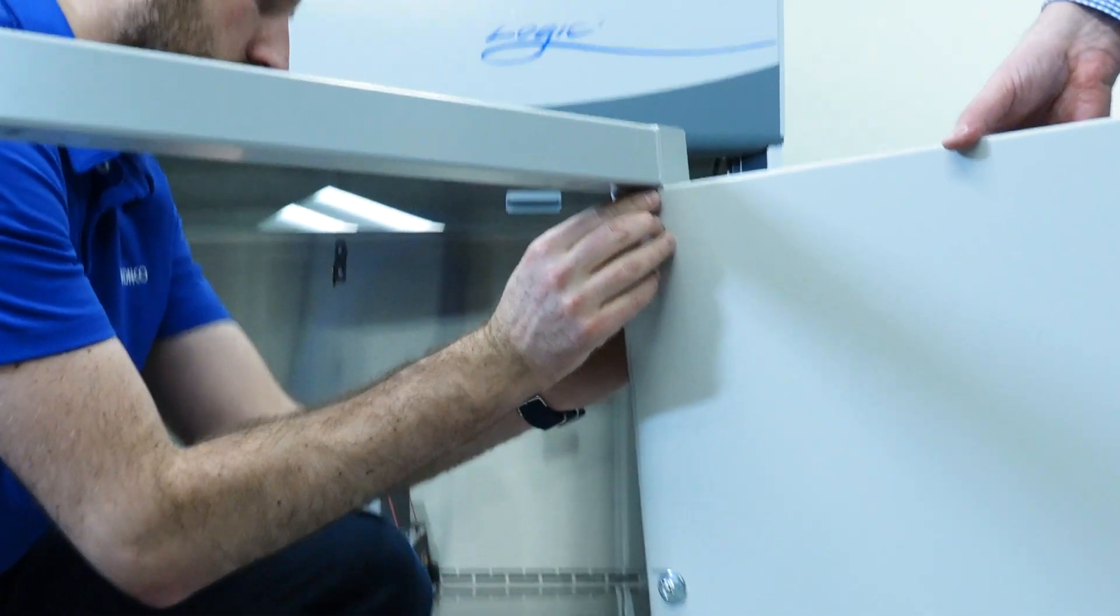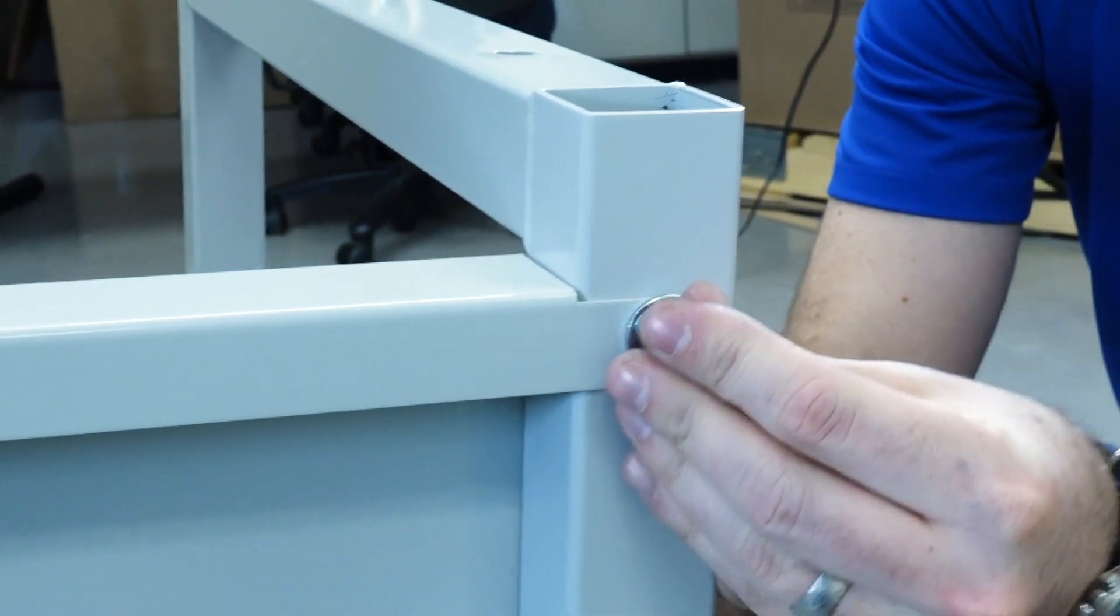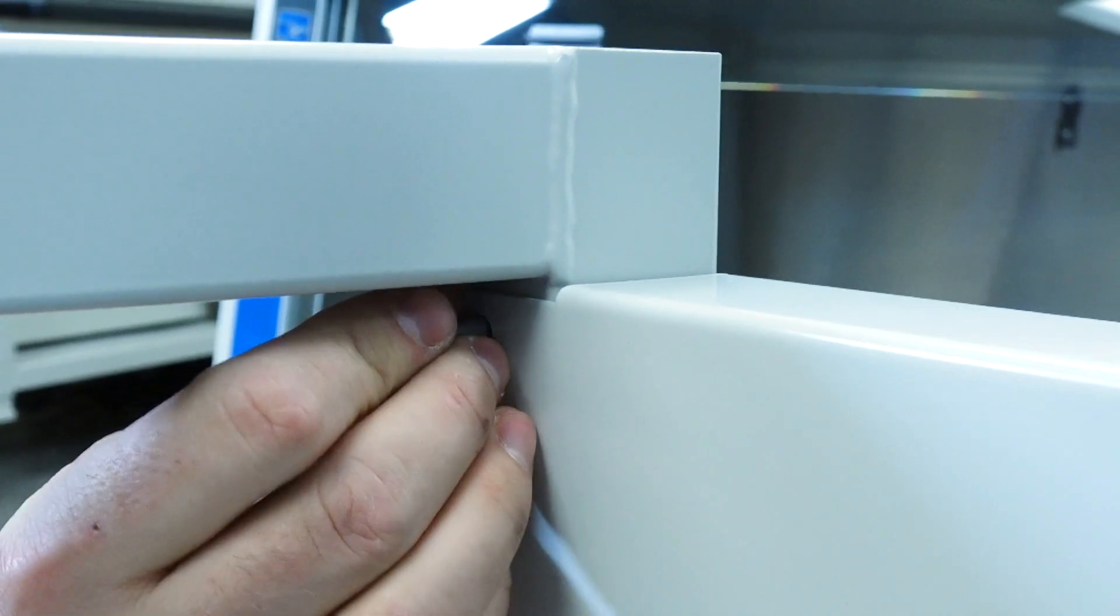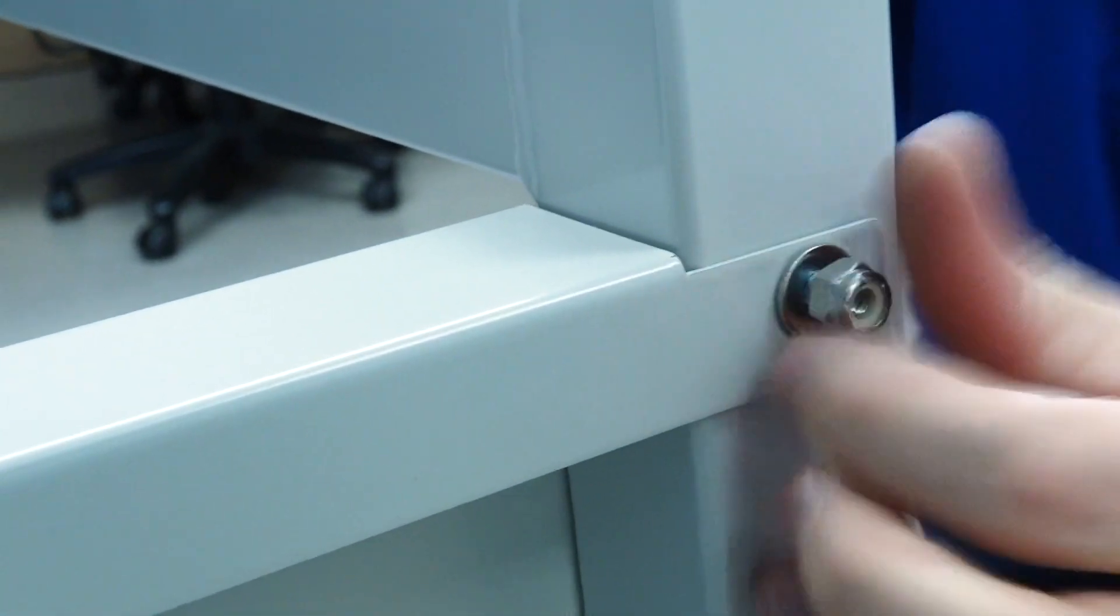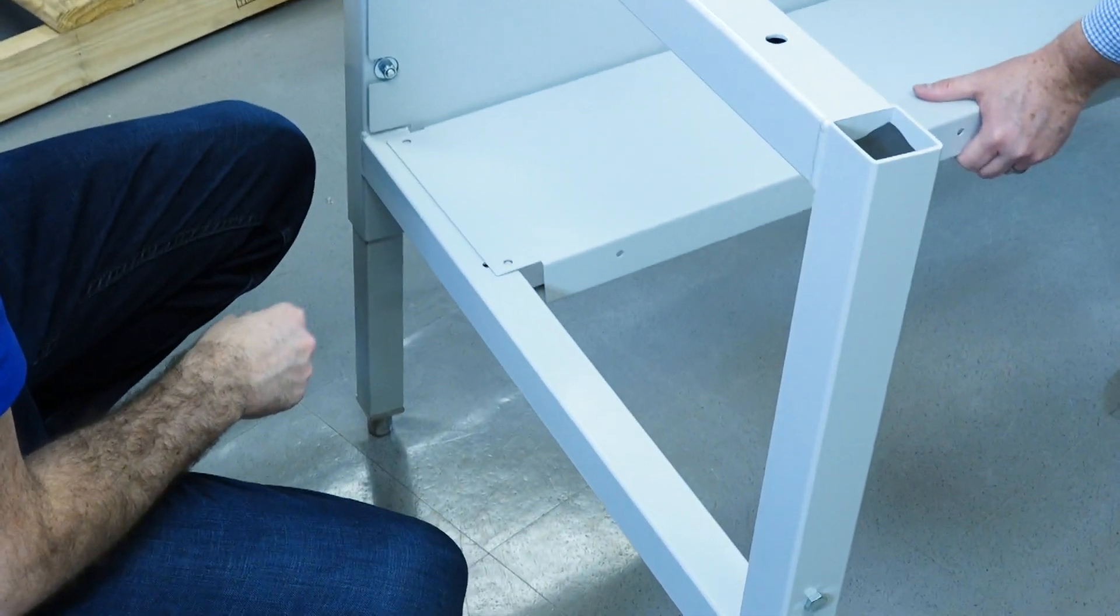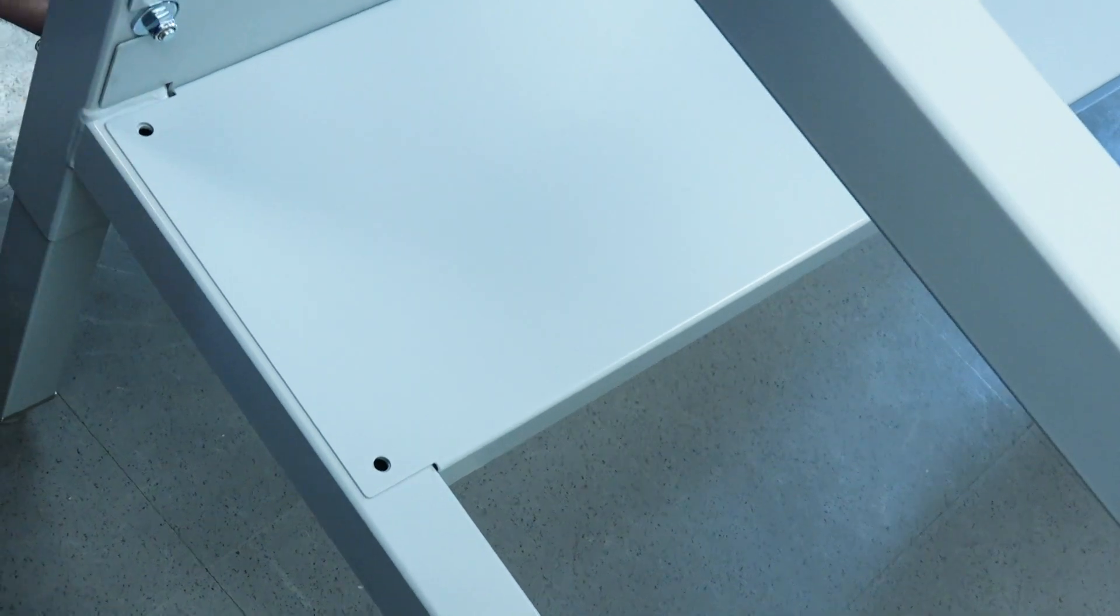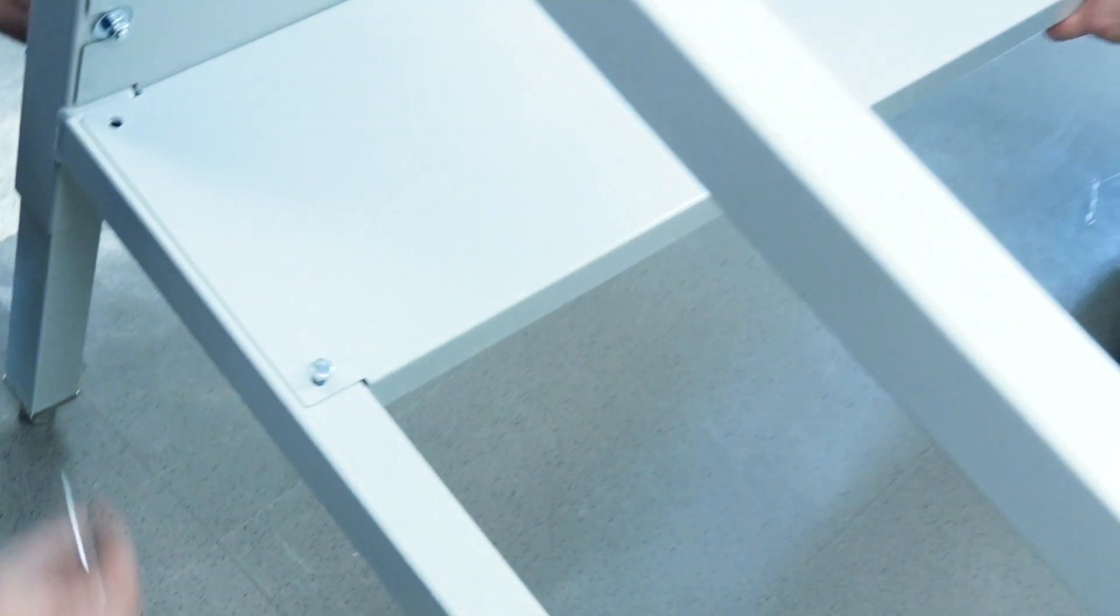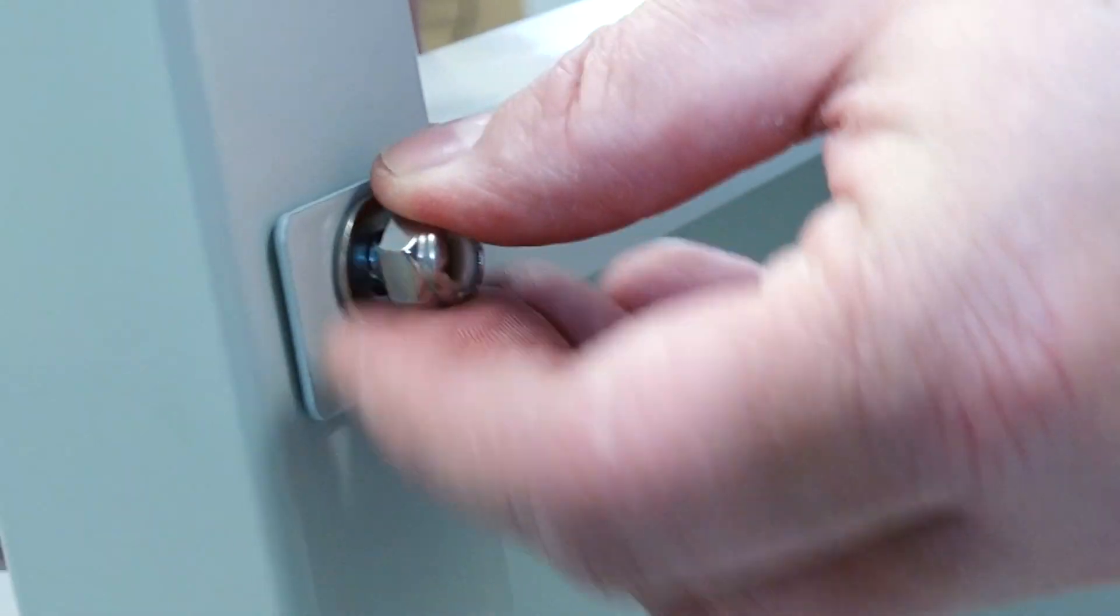Next, use three bolts to loosely attach the back panel and the bottom shelf to one leg assembly. Continue by attaching the other leg assembly with another three bolts.